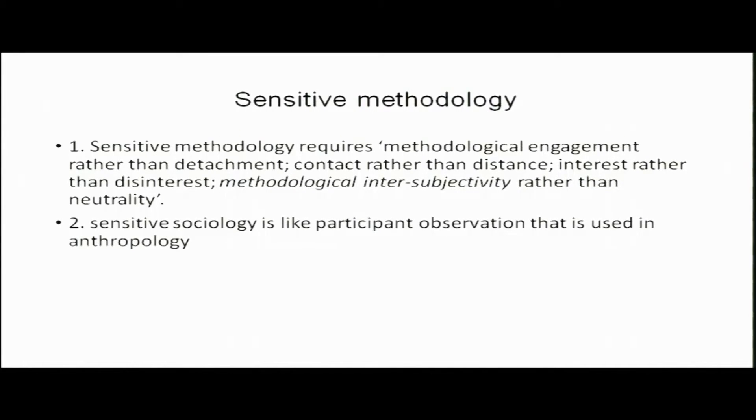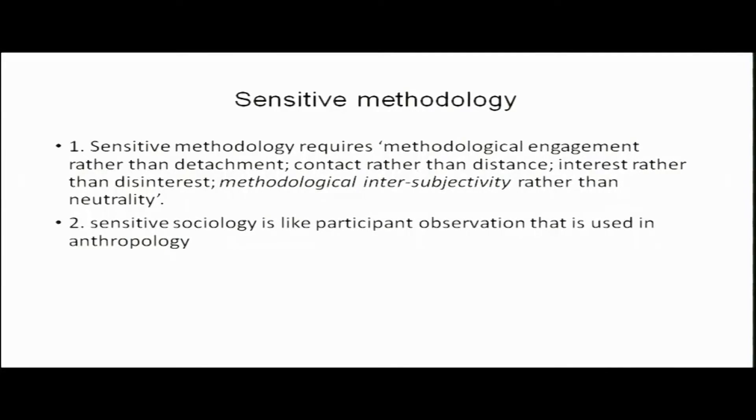Positivists would argue one has to analyze what scientists have already produced rather than talking to them. But here Knorr Cetina says a sociologist must go to the laboratory, interact with the scientist — one should not maintain distance but make contact, not be disinterested but show interest in what scientists are doing. Intersubjectivity means that when two individuals interact, both enter into a dialogue and try to understand each other. Sensitive sociology is like participant observation used in anthropology.